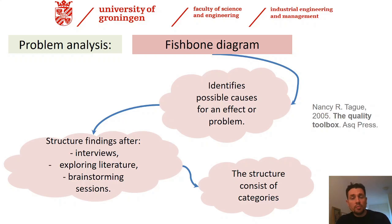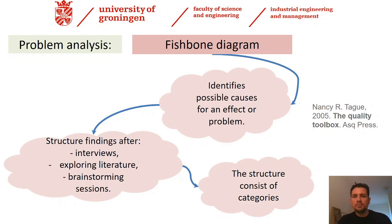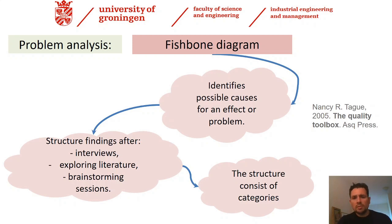One way to identify potential causes for a problem is the so-called fishbone diagram. This classical technique should come immediately after interviews, reading, and brainstorming sessions, where you categorize all the potential causes of the problem. This technique is not meant directly to write down your problem statement, but at least you can structure all the potential causes in one figure. This is the definition provided by the book 'The Quality Toolbox,' and the reference can be found on the right side of the slide.